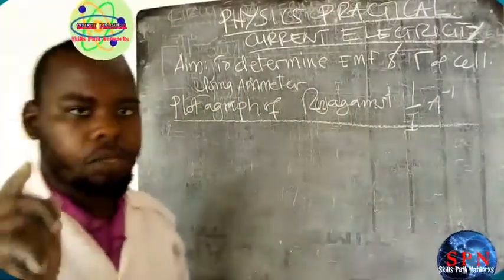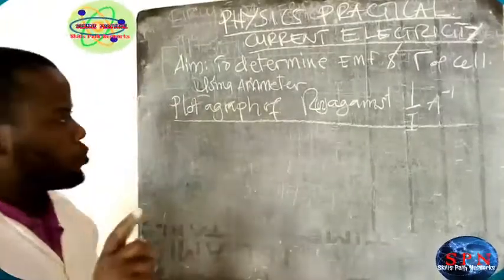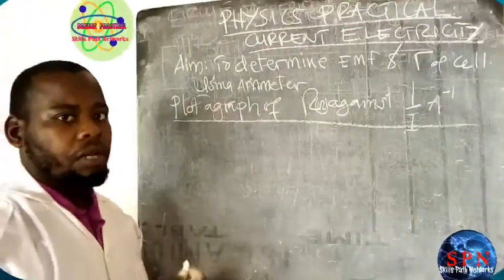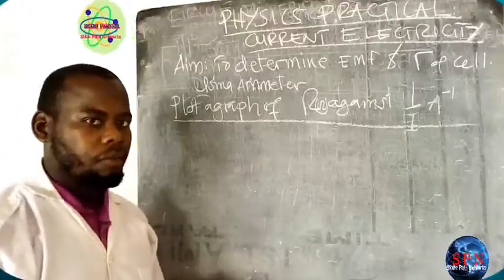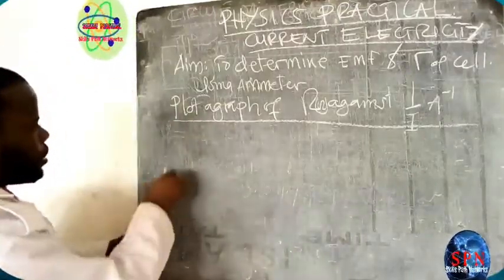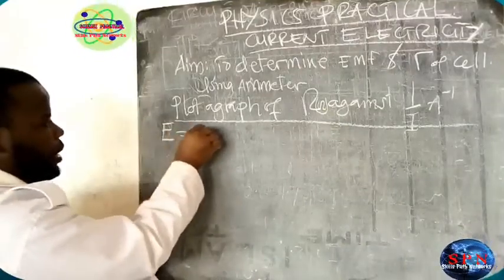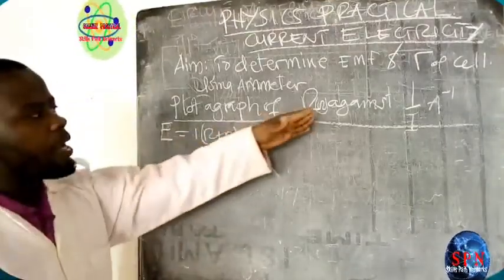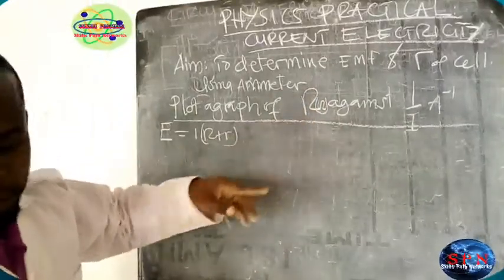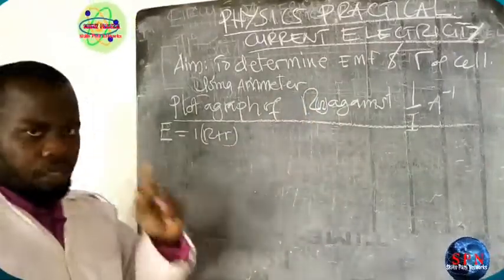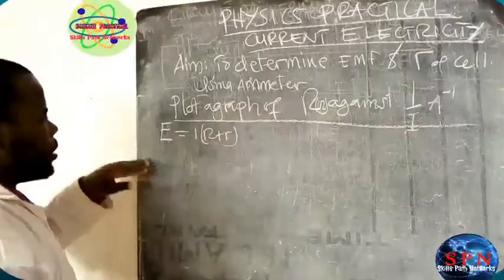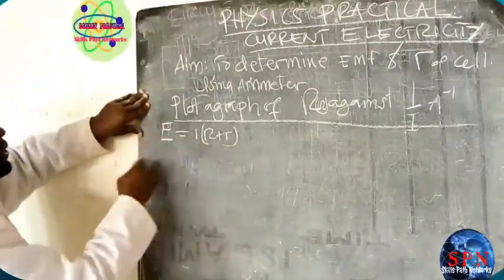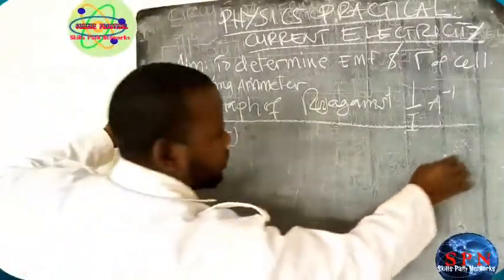According to our experiment, you will be asked to plot the graph of R against one over I. Since we only have an ammeter and not a voltmeter, we use the theory EMF = I(R + r). We rearrange this equation to make R the subject for the Y-axis and one over I the X-axis.